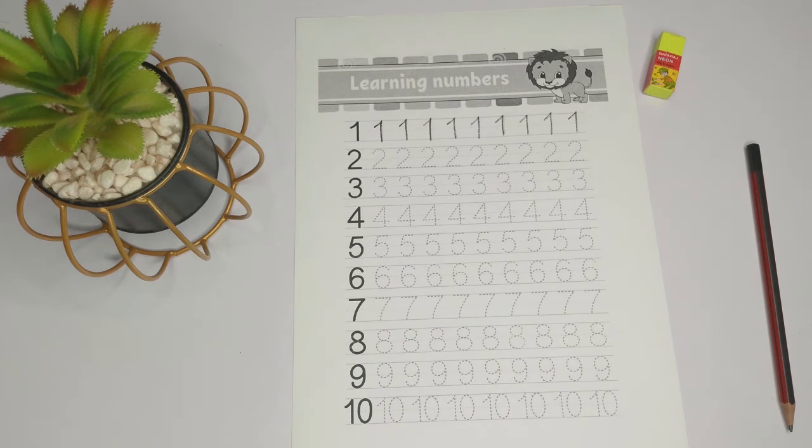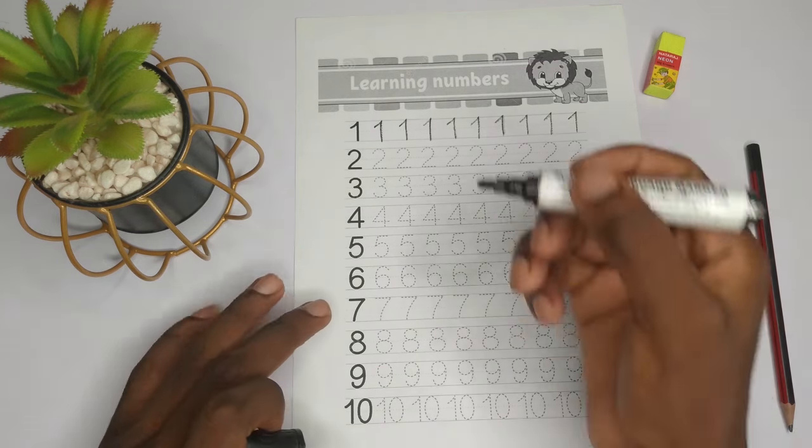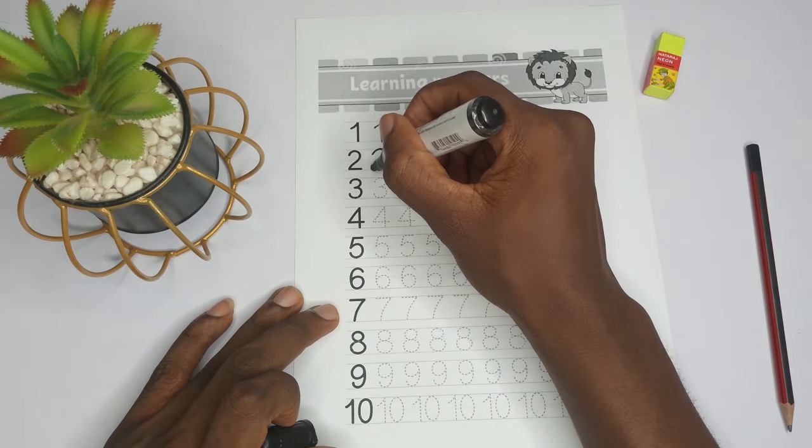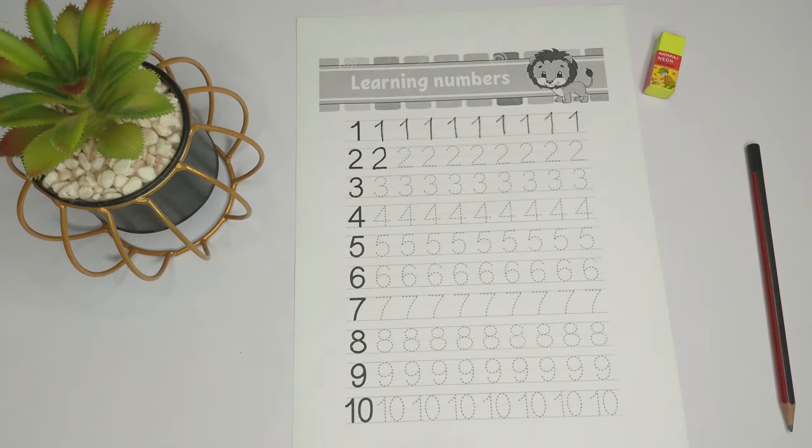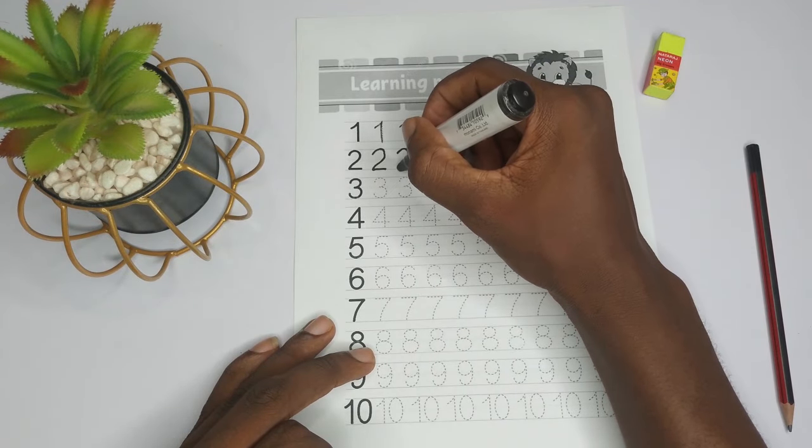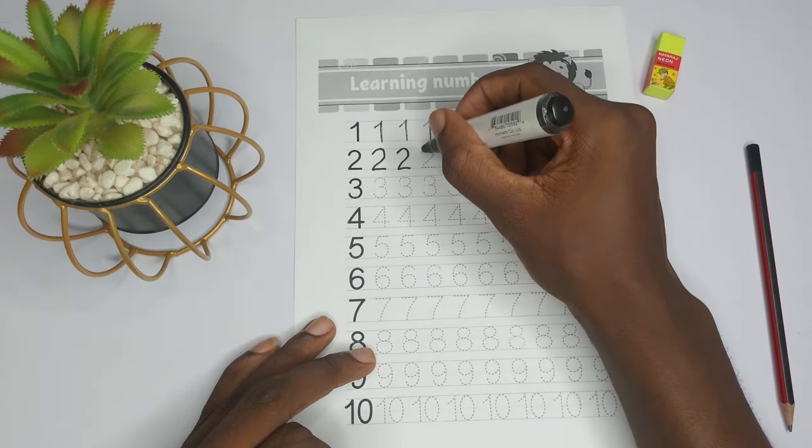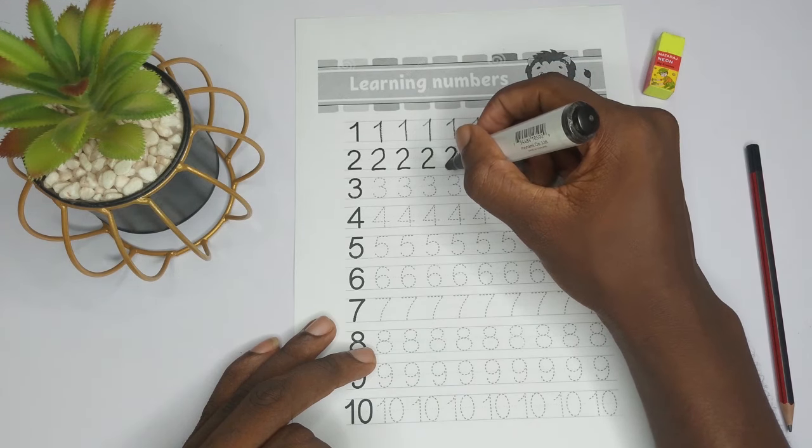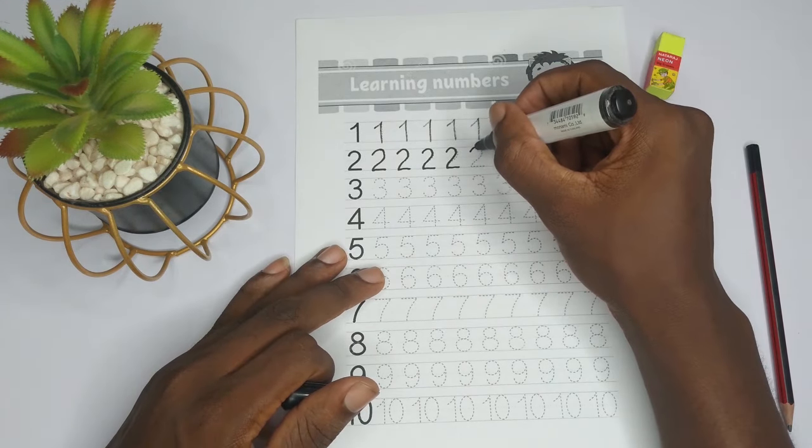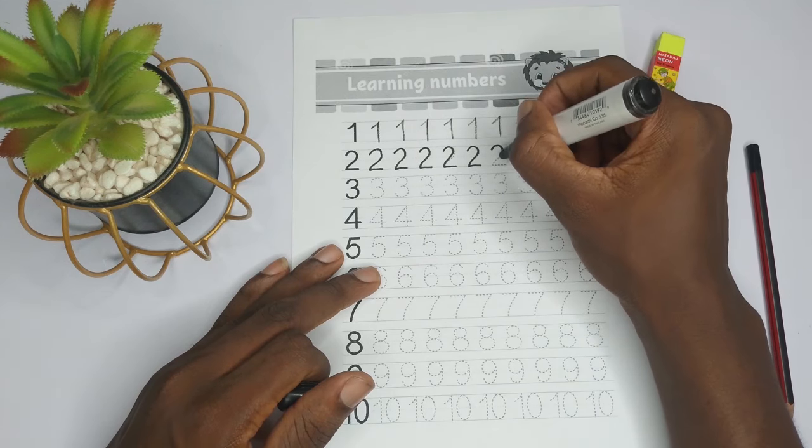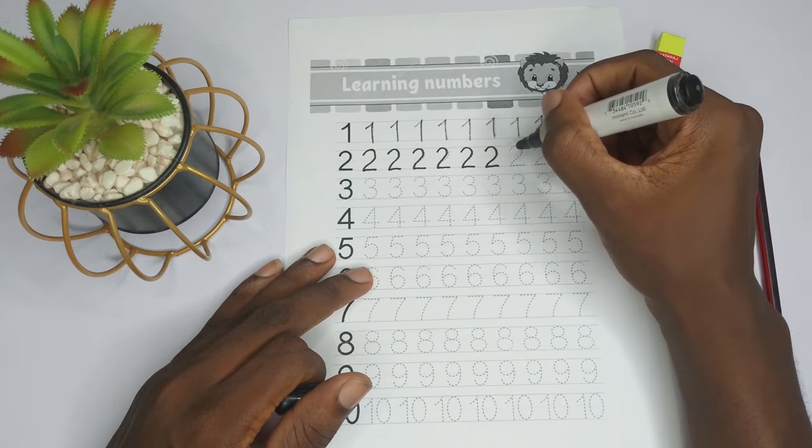Very good. Now this is how we write one. Now let's look at the second one, which is two. Two, two. So for two, we follow the dots. We go up, we curve a little, we come down, and then we go like this: two. So that is how we write two. We follow the dots, go up, curve a little, come down, and like this: two.